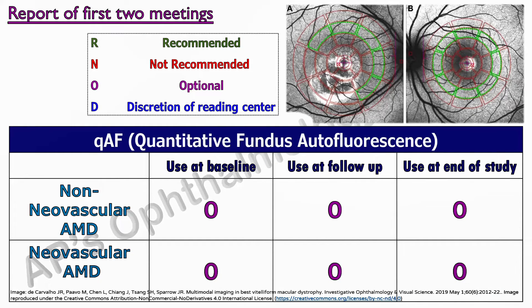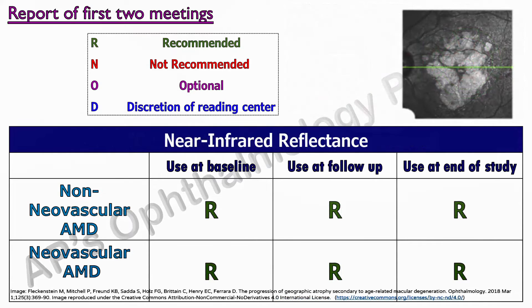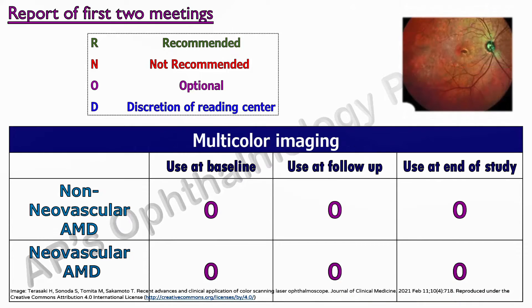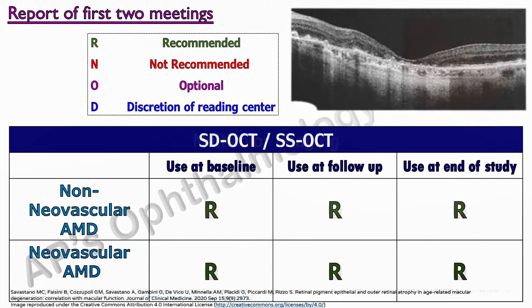Quantitative fundus autofluorescence is a newer modality that has been deemed optional at this point. Near-infrared reflectance images complement fundus autofluorescence imaging and should be included in all protocols. Multicolor confocal scanning laser ophthalmoscopy is considered an optional imaging modality as specific utility has not yet been demonstrated.